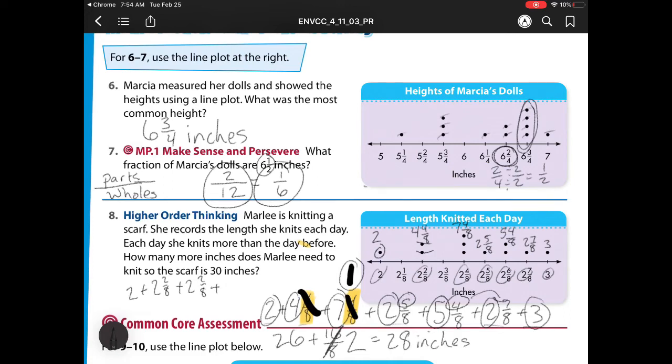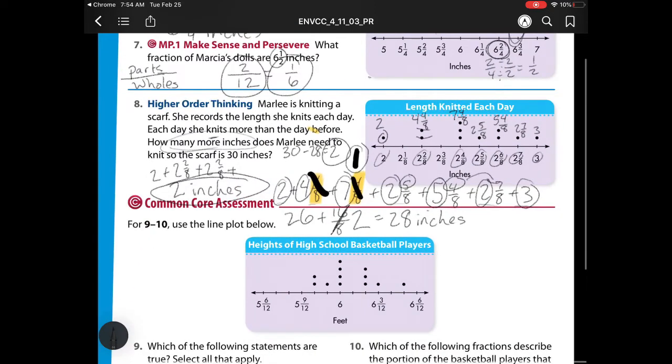So that's how much she's knitted so far, and it says how many more. So that means it's a subtraction. So I have 30 minus 28, which is 2. So after all that work, we know that she needs 2 more inches. Heading to our last one now.